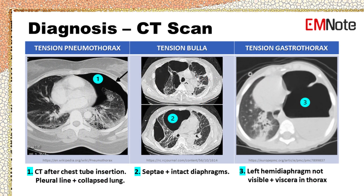Tension pneumothorax requires immediate chest decompression; the patient should not be sent to CT scan before chest tube insertion. CT scan of tension bullae may show intact diaphragms and massive bullae with thin wall septae. The wall of the bullae may sometimes be misinterpreted as a pleural line and can be confused with pneumothorax on a chest x-ray.